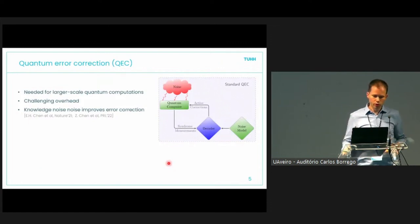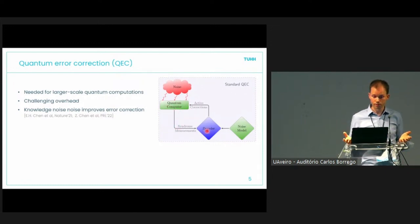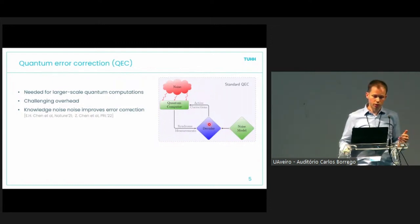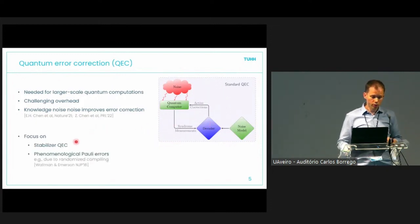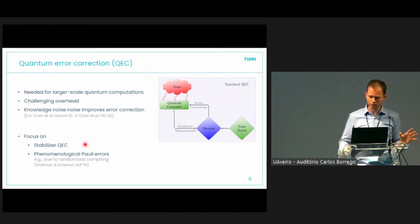First I will talk about quantum error correction and noise estimation on a higher level, give a basic example, and then share our results. We need quantum error correction for universal quantum computing and the overhead is huge. We have some quantum computer, we make syndrome measurements, have a decoder which gives us the correction instructions. When you know how the noise on your physical qubits is distributed, you can calibrate your decoder and get lower logical errors.